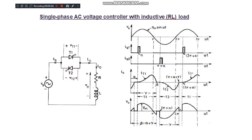With an RL load, when inductance L is connected across the load, there is a change in the output voltage. When the triggering signal alpha is applied, the first thyristor starts conducting from alpha to pi plus beta, where beta is the extension angle, alpha is the delay angle, and gamma is the conduction angle. Beta equals alpha plus gamma. Because of the inductance, even when the voltage goes negative, the current remains in the positive direction. The inductance causes continuous current flow, and we can also generate regenerative voltage and get smooth continuous current by increasing the inductance value.